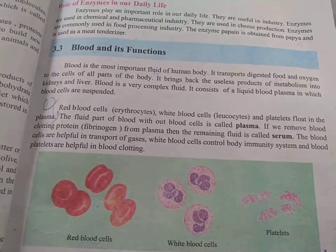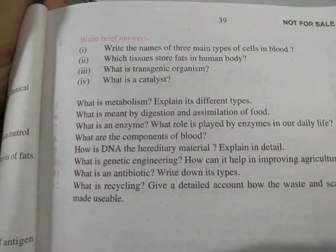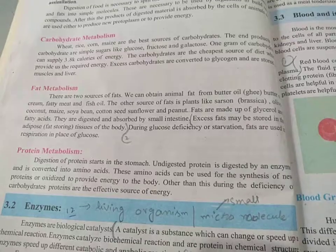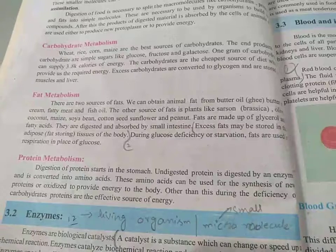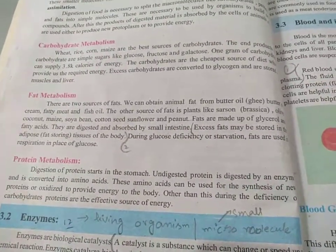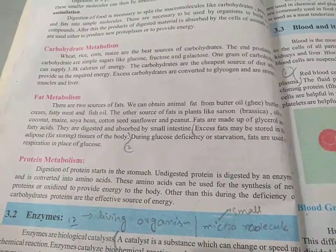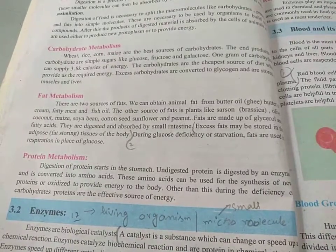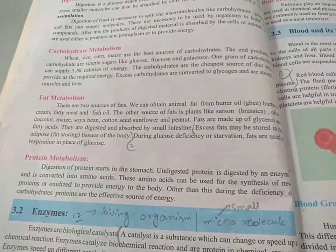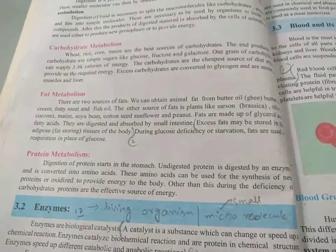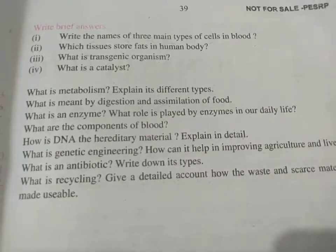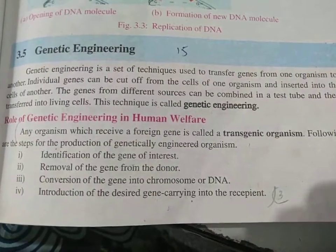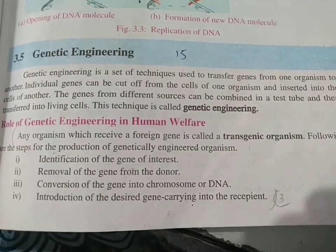Which tissues store fats in the human body? Come to page 30, heading: fat metabolism. Here you can see the marking — the name you need to learn: excess fat may be stored in the adipose fat-storing tissue of the body.